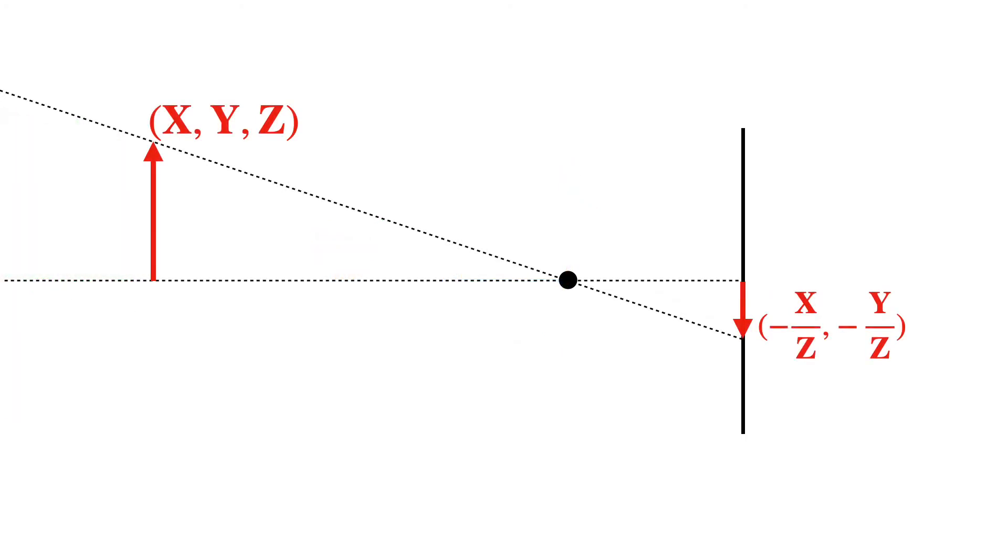A point x, y, z then projects to negative x over z comma negative y over z. We can make this even simpler by moving the image plane in front of the center of projection. This exposes the image right side up. And while it's physically impossible to build a camera this way, the math works just fine and removes the negative sign.